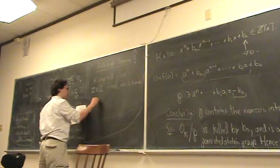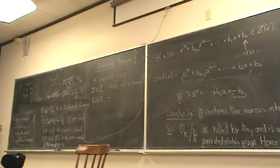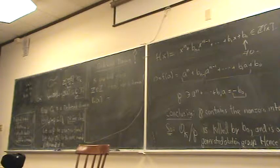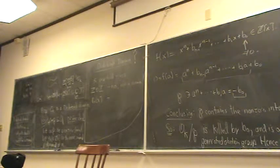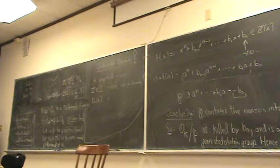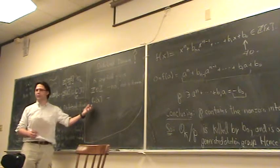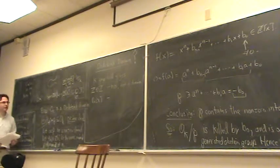What about Q[x], the polynomial ring over Q in one variable? Is that a Dedekind domain? It is a domain, it's Noetherian by the Hilbert basis theorem. Is it integrally closed in its field of fractions? Yes. Is every non-zero prime ideal maximal? The prime ideals are of the form generated by an irreducible polynomial, and Q[x] mod a maximal ideal is isomorphic to a number field — so yes, everything works. This is another example of a Dedekind domain.